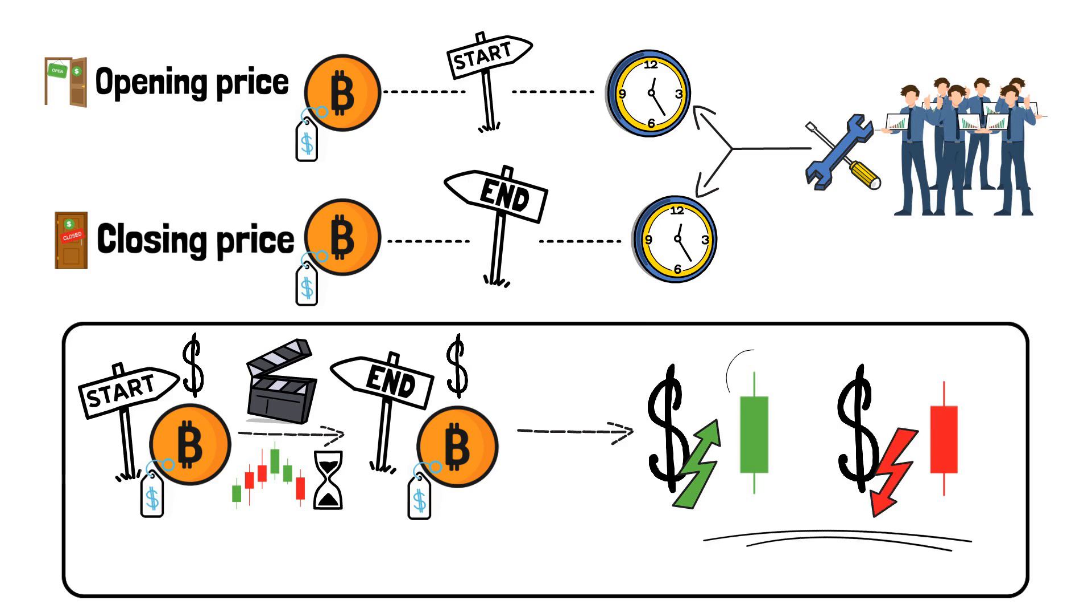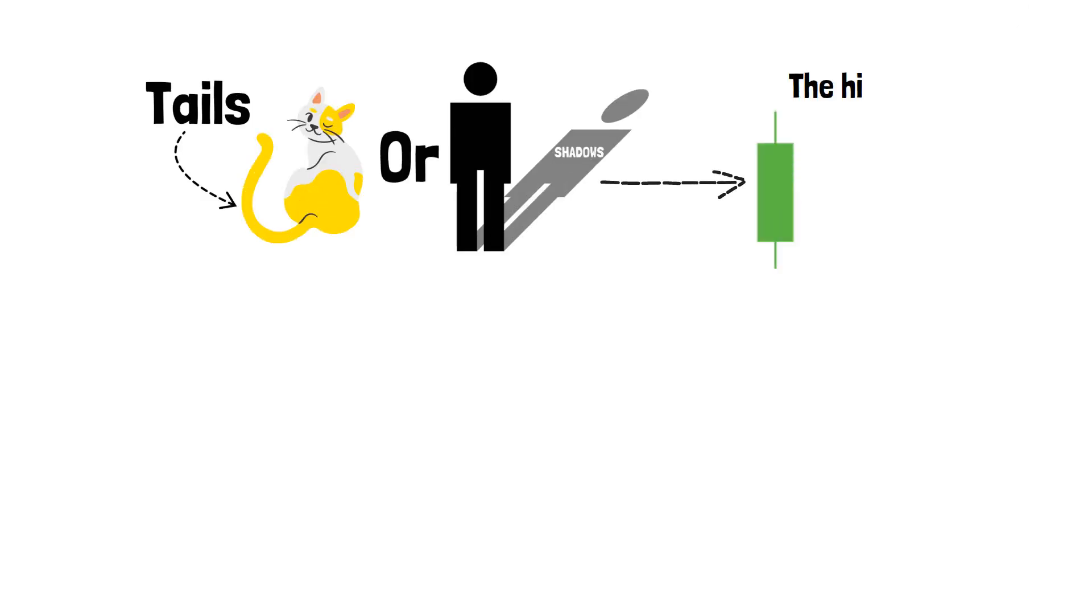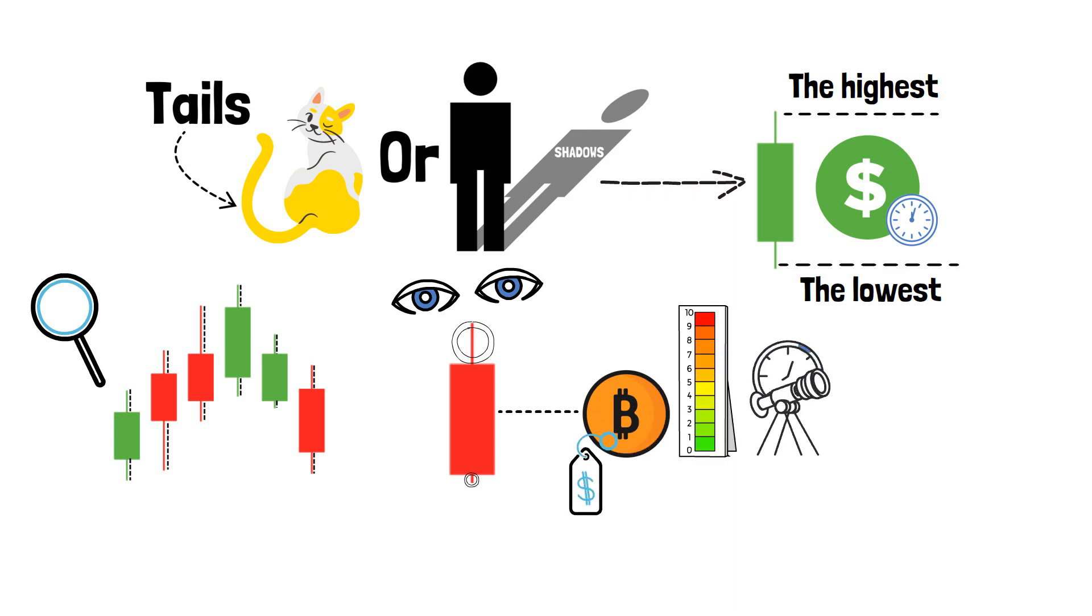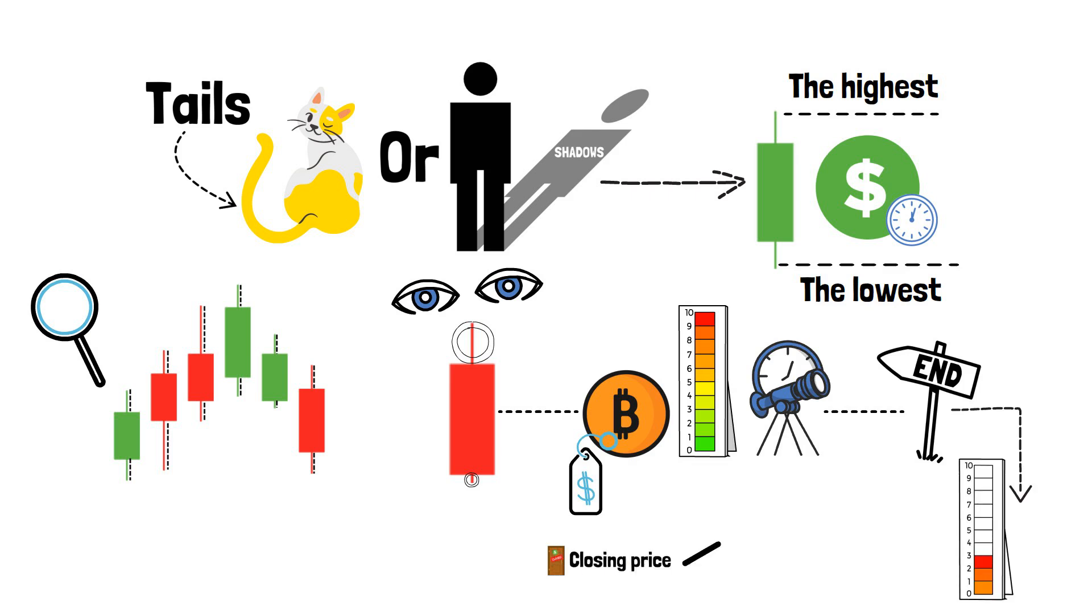But what are those little wicks at the top and bottom of each of the candlesticks? Also known as tails, or shadows, the candlestick wicks represent the highest and lowest price points reached during the time period. You'll easily notice that most of these wicks differ in length. Let's say you see a red candlestick with the wick at the top of it being longer than the one at the bottom. This shows that the particular crypto's price reached a high point during the set time period, but at the end of it, it fell back down and the closing price was lower than the opening one.